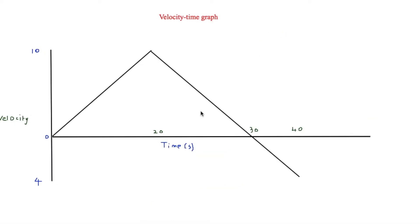Now it's time to look at velocity-time graphs, which are slightly different to displacement-time graphs. For example, the gradient of a velocity-time graph is going to be acceleration. So the gradient of this line on the graph is going to be the acceleration.